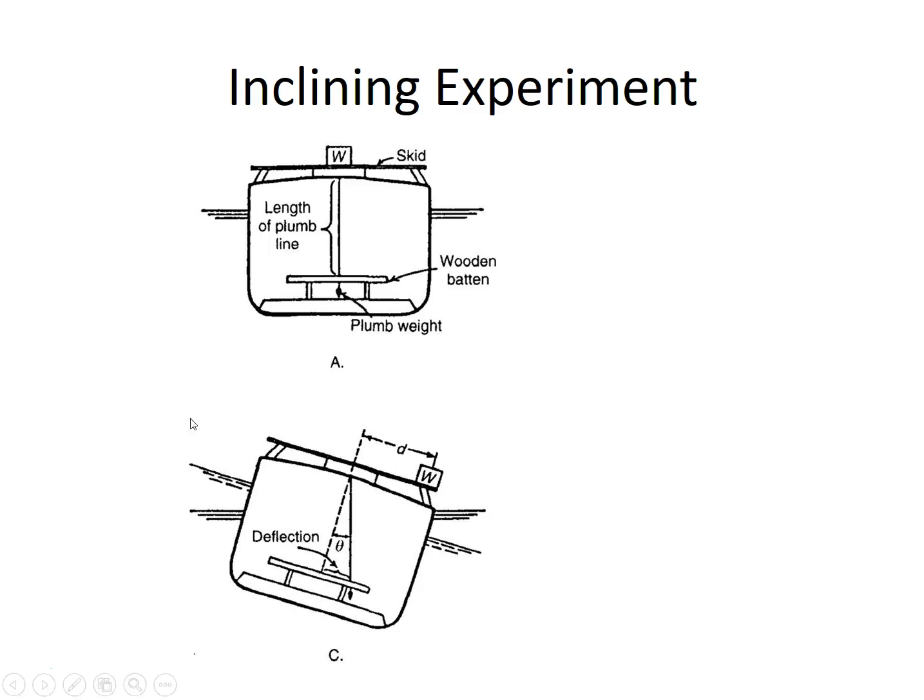The basic idea here is that you have a known weight. You might load it up on the centerline and on the ship you will hang a pendulum and you'll know exactly how long that pendulum is. Down at the bottom of the ship you're going to set up a kind of wooden batten down there. And that pendulum will have a plumb weight on it and then what you'll do is you'll take that weight, you'll know what the weight is and you'll slide it a known distance to port or starboard.